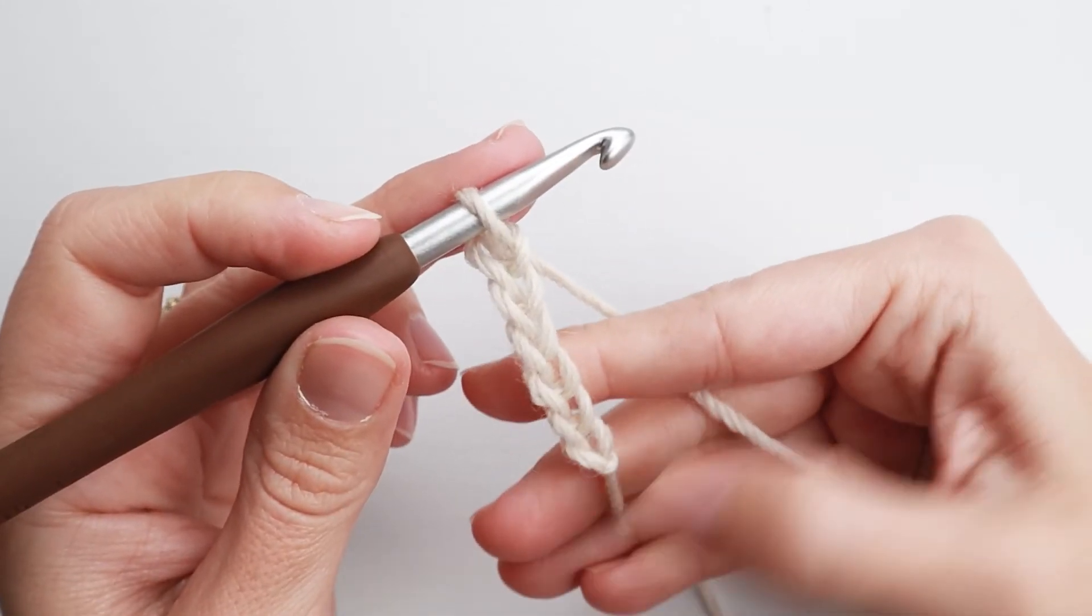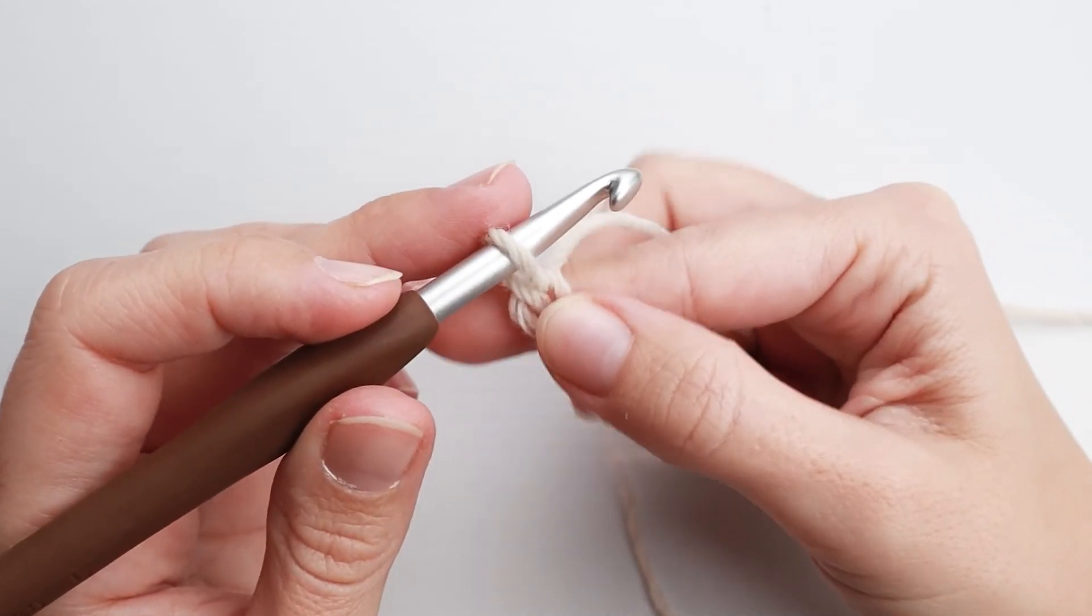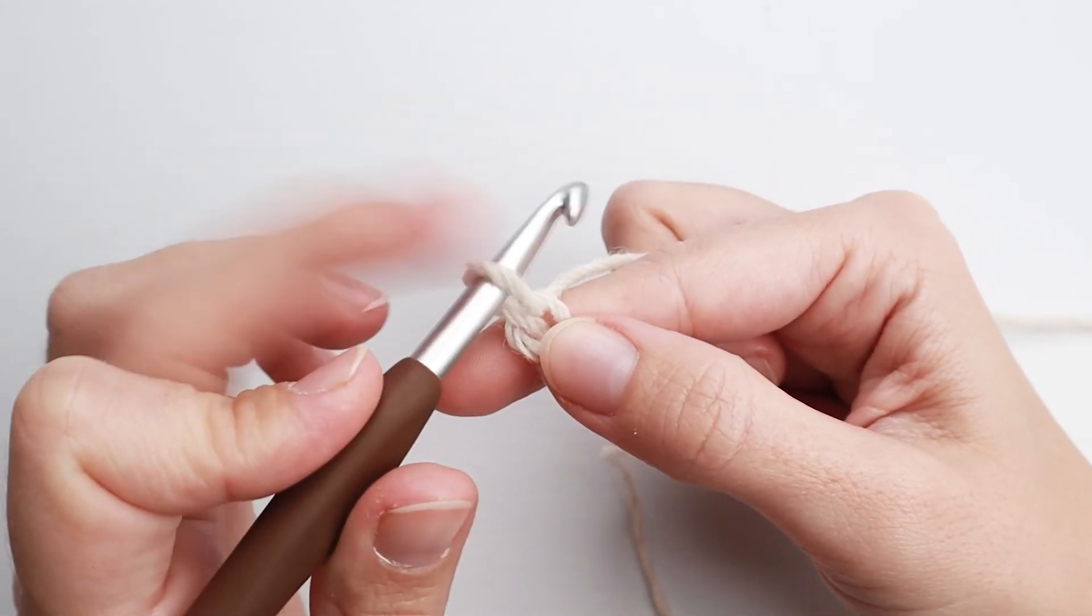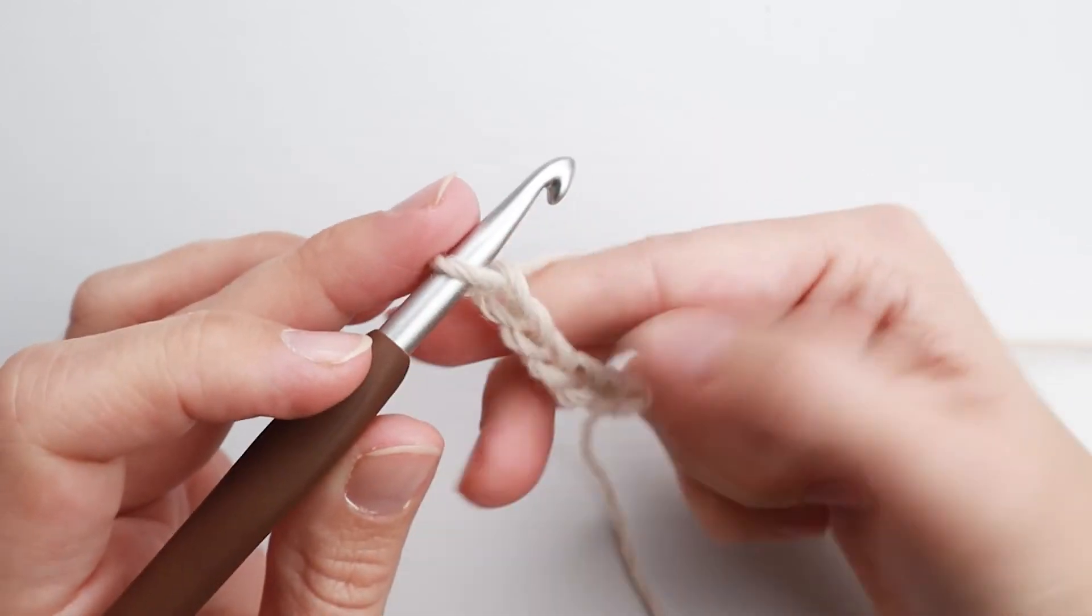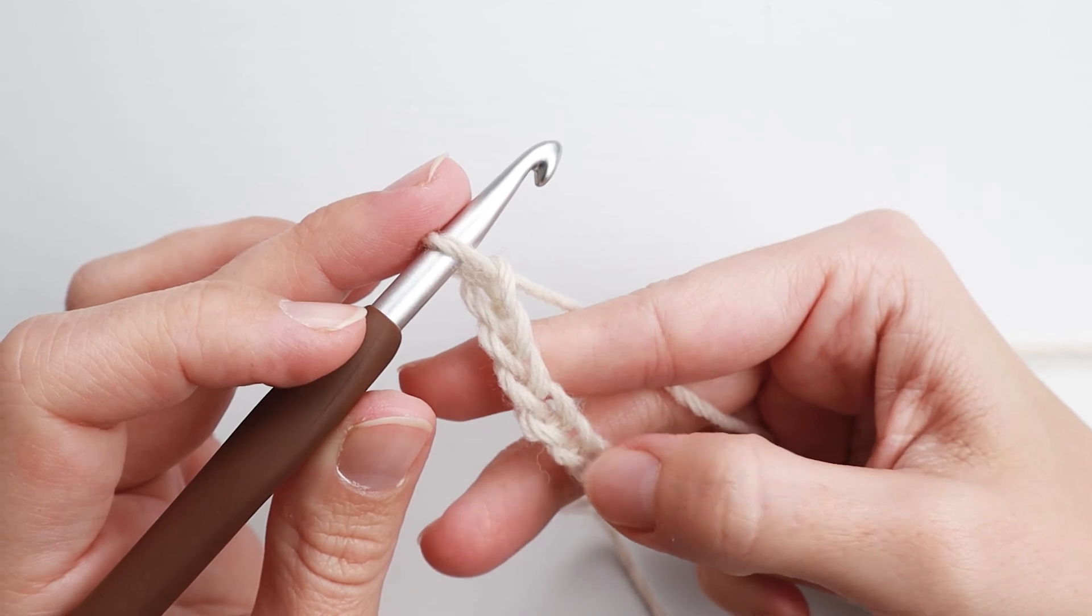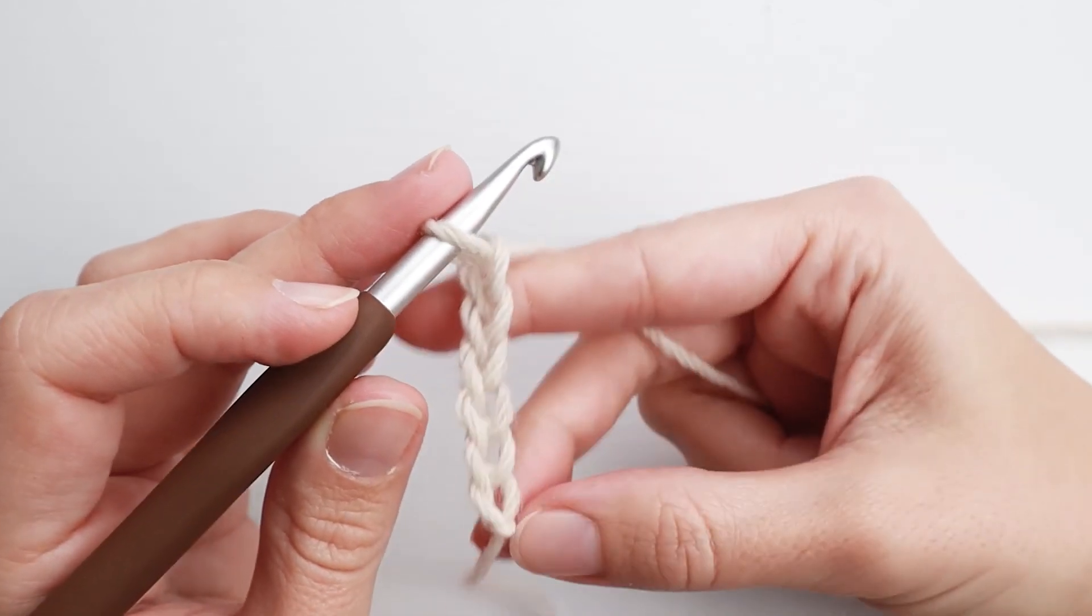And this is how you count them: 1, 2, 3, 4, 5, 6 chain stitches. You never count this loop on your hook as a stitch. So it's 1, 2, 3, 4, 5, 6 chain stitches.